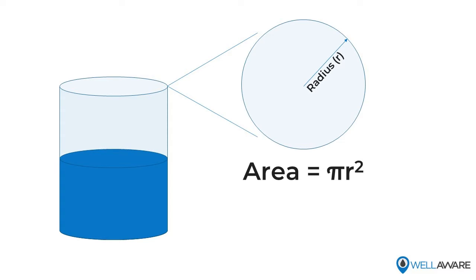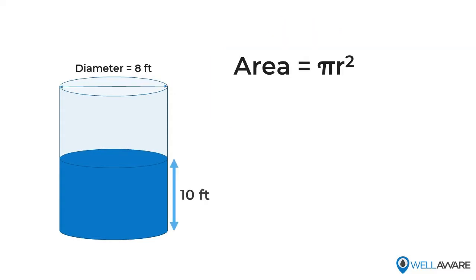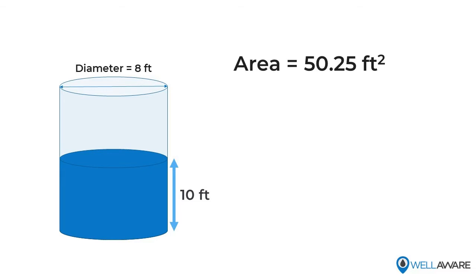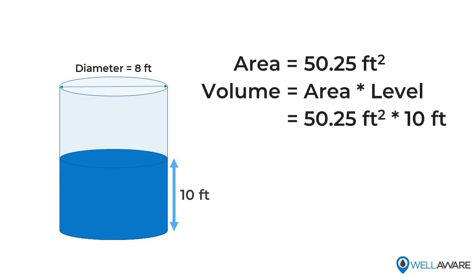So here's an example of a vertical cylinder with 10 feet of water in it and a diameter of 8 feet at the bottom. First we get the radius - that's half the diameter, so 4 feet. Square that and you get 16 feet squared. Then multiply it by pi and you're at about 50 and a quarter square feet for your cross-sectional area. Multiply that by the level of 10 feet and you've got a water volume of about 503 cubic feet.